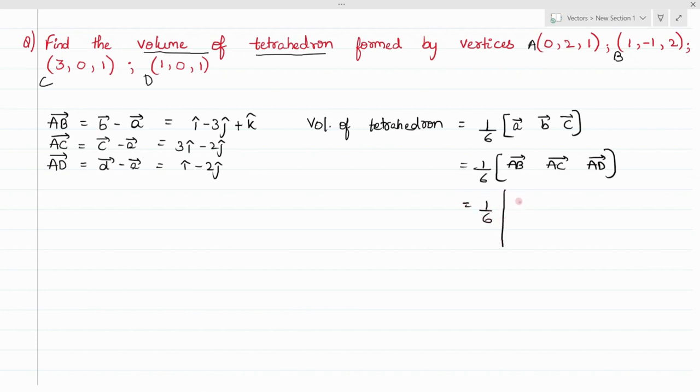The determinant components are: one, minus three, one; three, minus two, zero; one, minus two, and zero. You will get zero, zero minus three, again zero, one, minus six plus two, which is minus four. It should be the mod, right? Mod of minus four becomes two by three. So this is the required answer to this question.